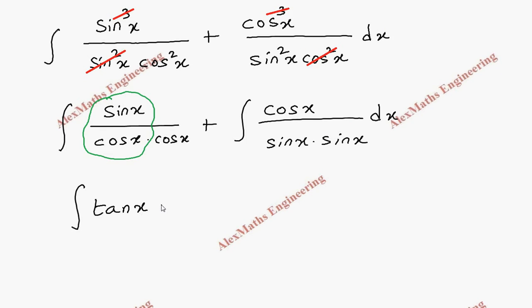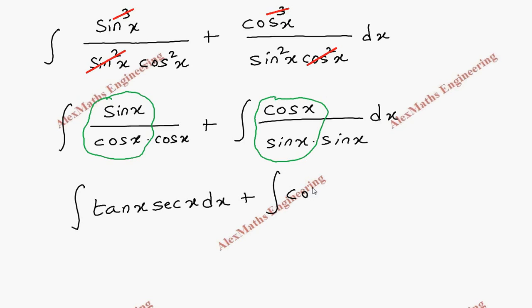So the remaining is tan x · sec x dx, plus the integral of the second part which will become cot x · (1/sin x), which is cot x · cosec x. After this we have direct integration formulas: the integral of sec x · tan x is sec x, and the integral of cosec x · cot x is minus cosec x.